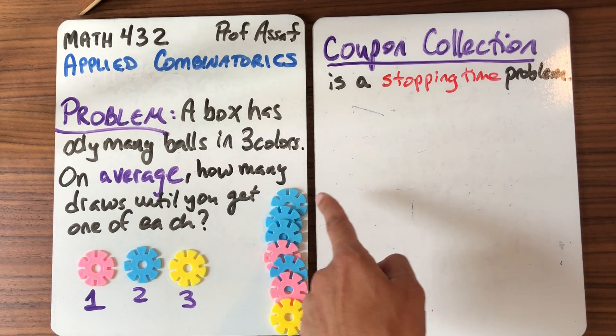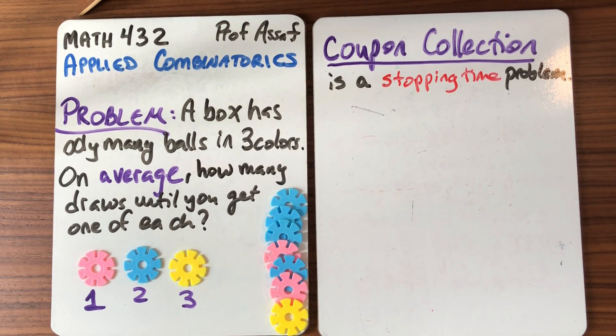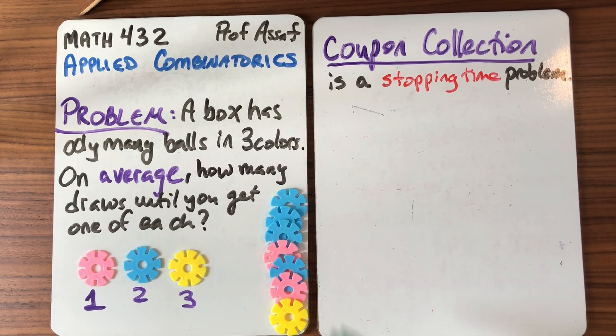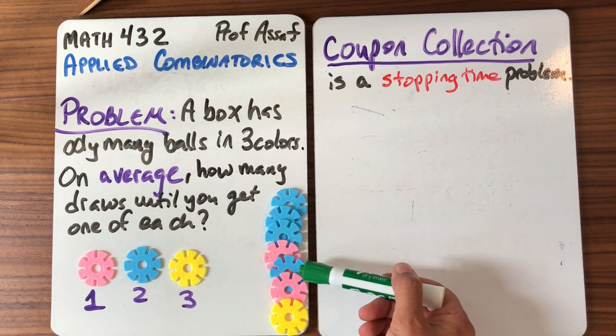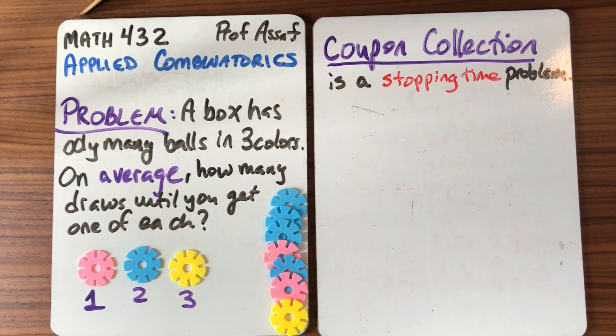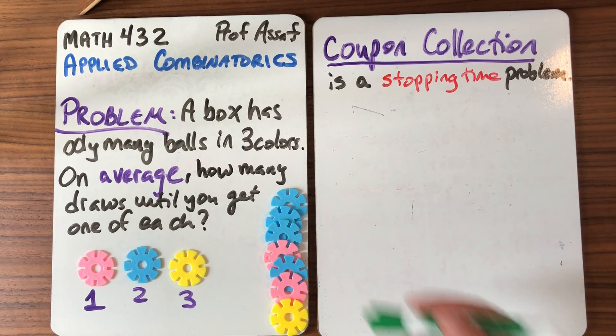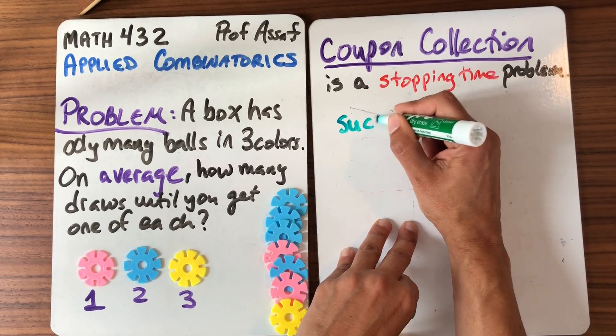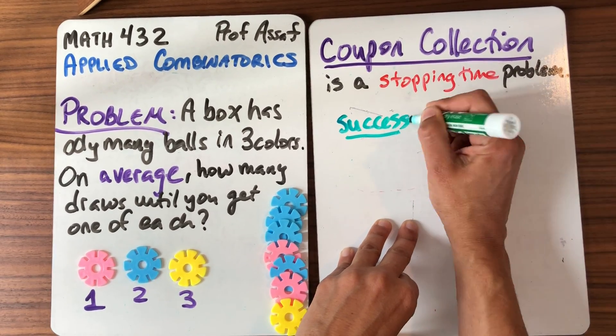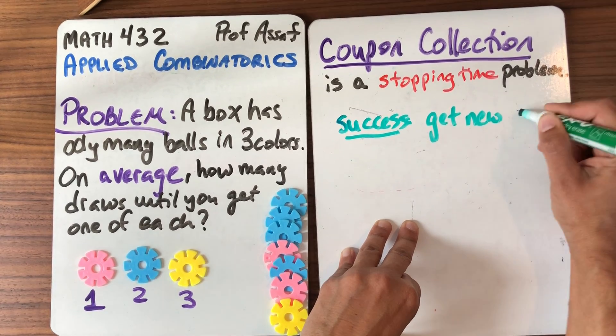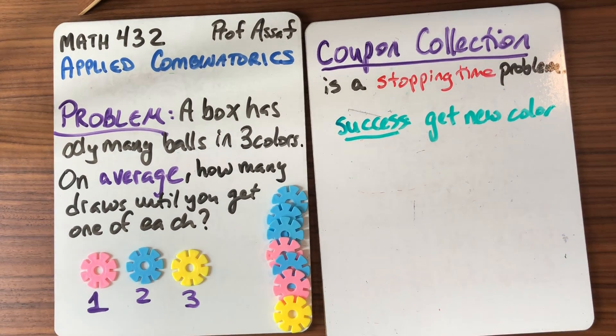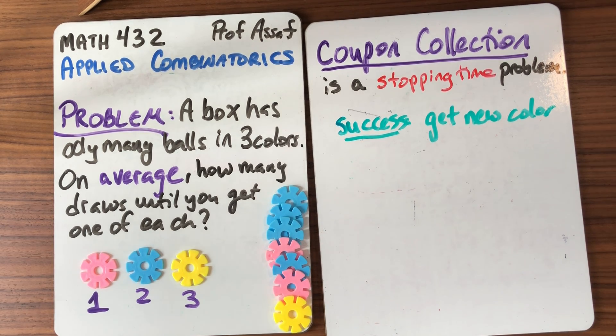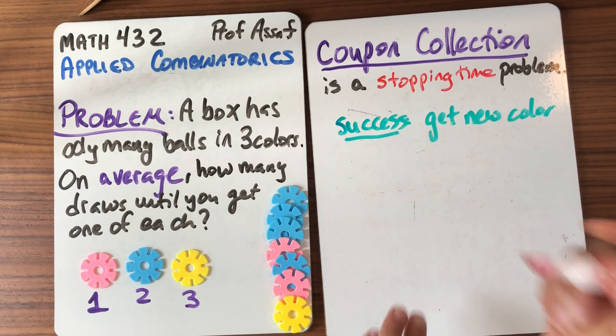So I can think about, as I was doing this, I said, oh that was good, that was bad. When was it good? The first time was good. When I drew the pink the first time, that was a success. Then this didn't help me, didn't help me, and then this was my final success. So we can think about this coupon collection problem as a success and a failure event. A success is we get a new color. When I got the blue, when I got this pink, and when I got that yellow, those were my successes.